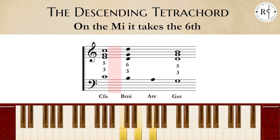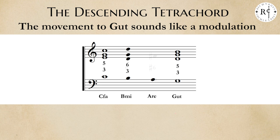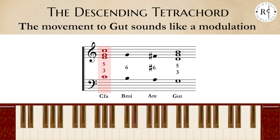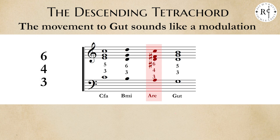The movement to G ut sounds like a modulation to G major. For that, use the sharp sixth on D Re as the leading tone of the new key. On the major sixth above A Re — A, F sharp — we put the third, fourth and sixth chord, to avoid having the fourth and sixth alone, which is unstable because of the fourth. This creates the same movement Fa-Mi against Mi-Fa, but in G major.